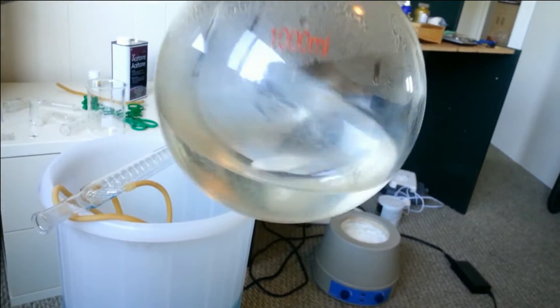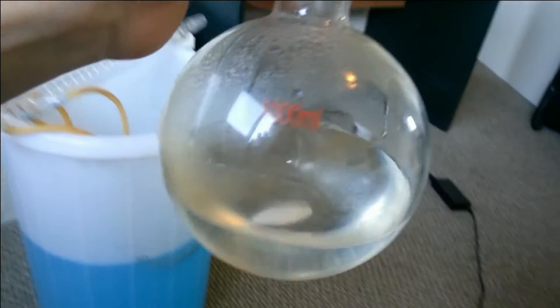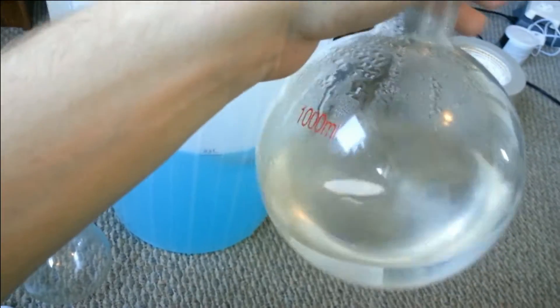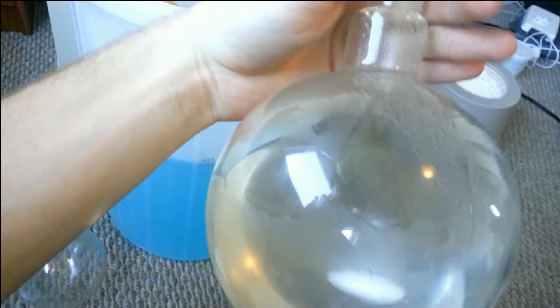Simple distillation is used to separate a liquid from a solid that is dissolved in the liquid. For example, if I wanted to separate water from salt in a solution of salt water, I would set up simple distillation.